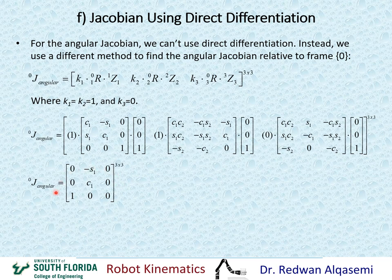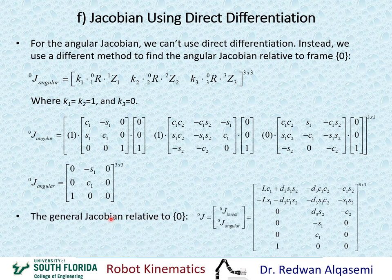Now that we have both the linear Jacobian from the previous slide and the angular Jacobian from this slide, we can combine them to get the general Jacobian in reference to frame 0. The linear Jacobian goes in the top 3x3 and the angular Jacobian in the bottom 3x3, giving a 6x3 Jacobian in reference to frame 0.